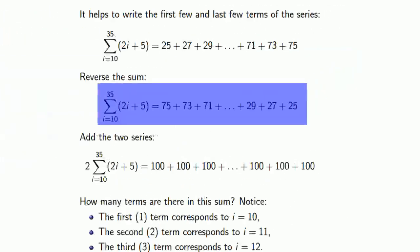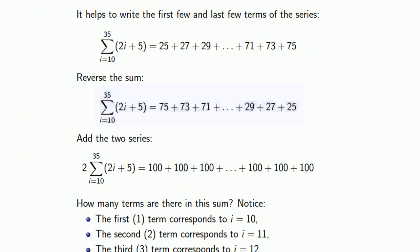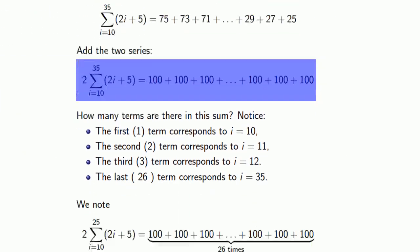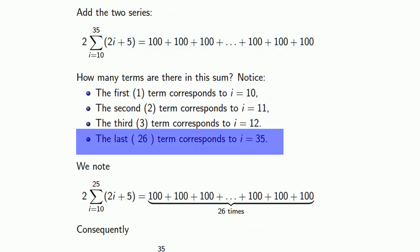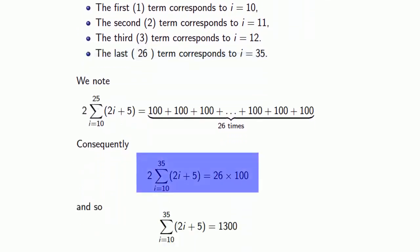We reversed our terms, added them together, found the number of terms, and by adding everything together found twice the actual sum so we divided by 2 to get the sum itself.